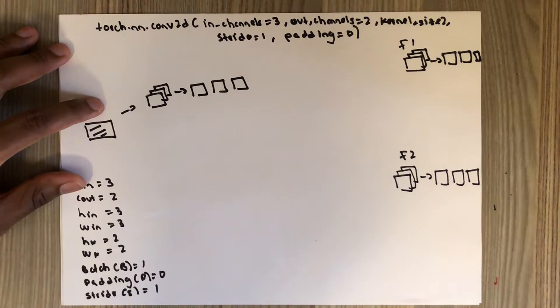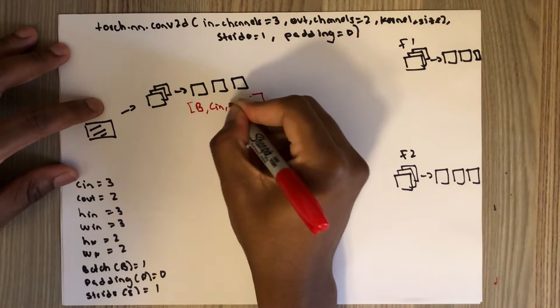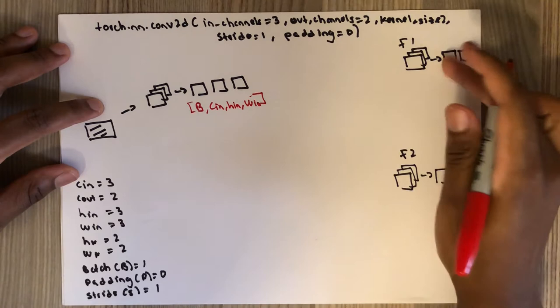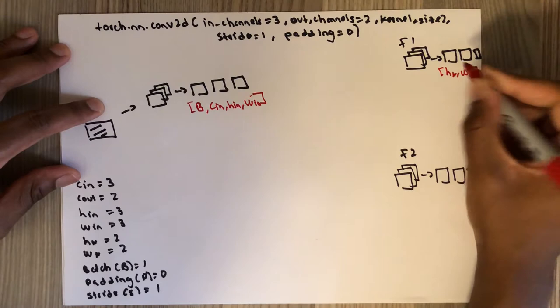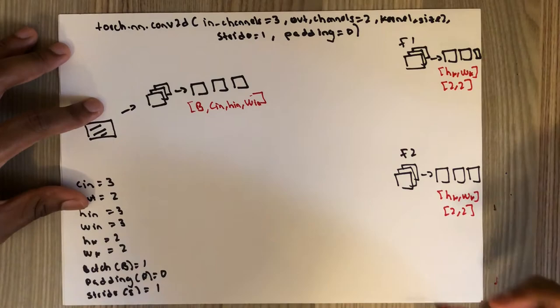The dimension of the input will always be of the form B × C_in × H_in × W_in. The dimension of each of the filter channels will always be H_k × W_k, which is 2×2. Similarly for the other filter channels, H_k × W_k is also 2×2.